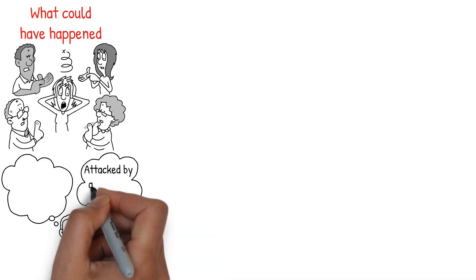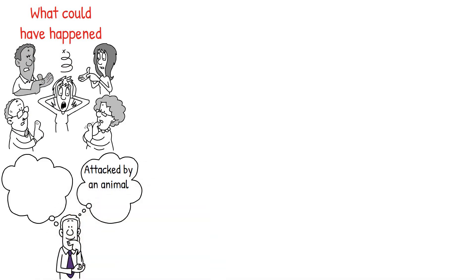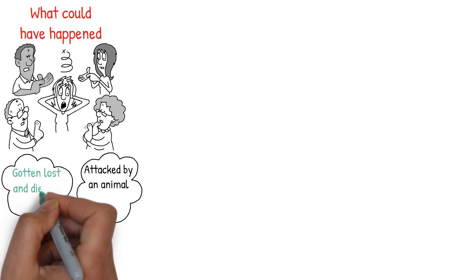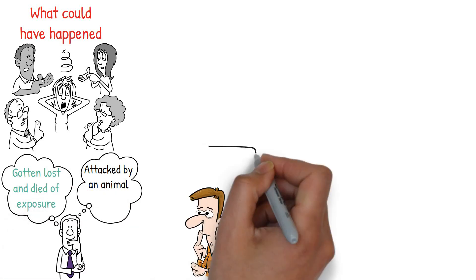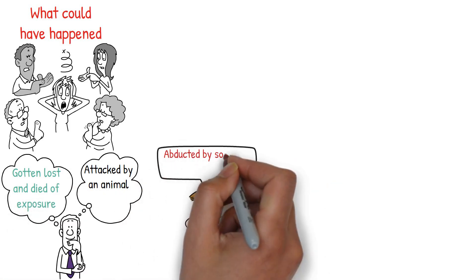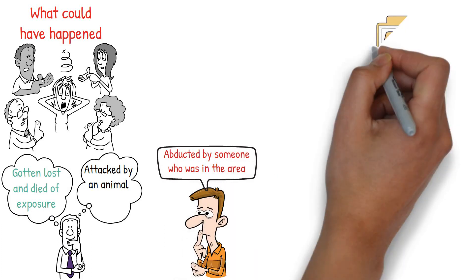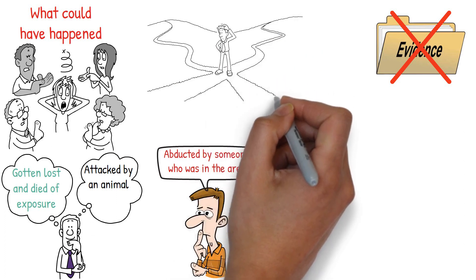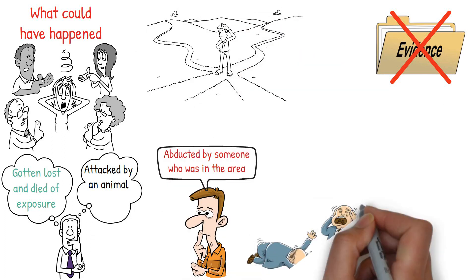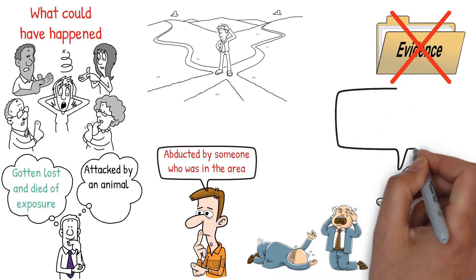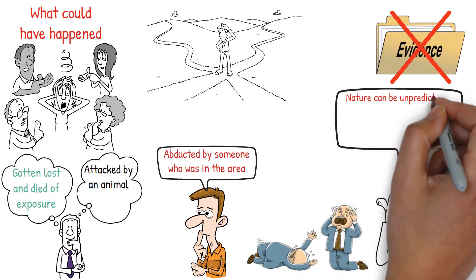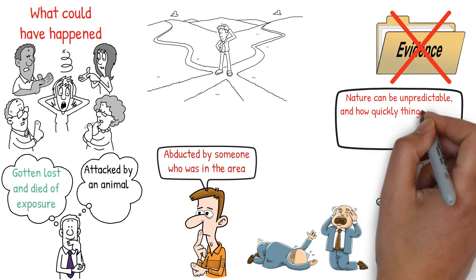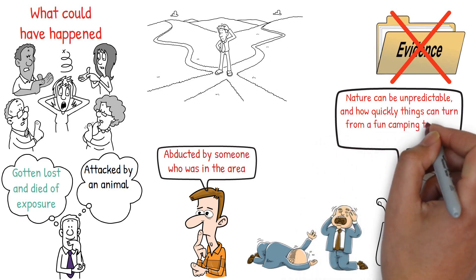Some believed that he may have been attacked by an animal, while others thought he might have gotten lost and died of exposure. Some even speculated that he might have been abducted by someone who was in the area, but there was no evidence to support any of these theories. The case of the missing camper remains a mystery to this day, leaving his loved ones with the agony of not knowing what happened to him. It's a stark reminder of how nature can be unpredictable, and how quickly things can turn from a fun camping trip to a terrifying ordeal.